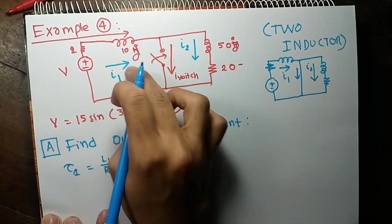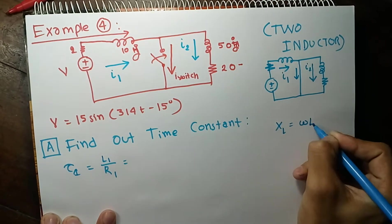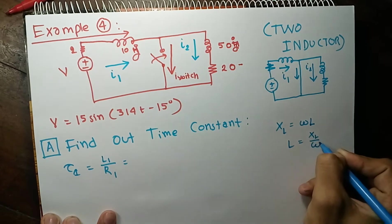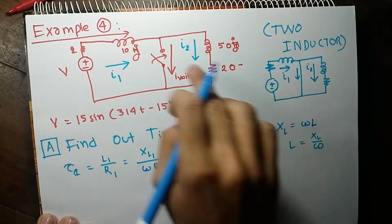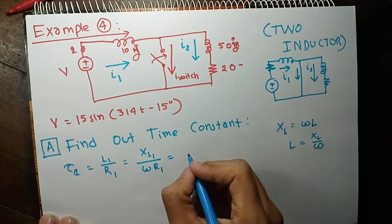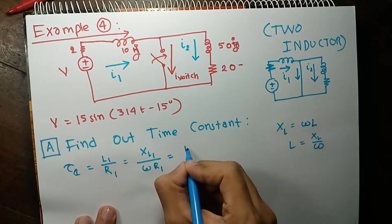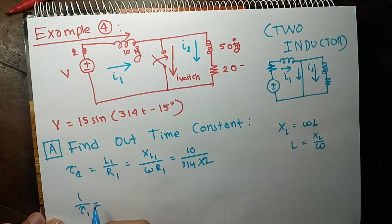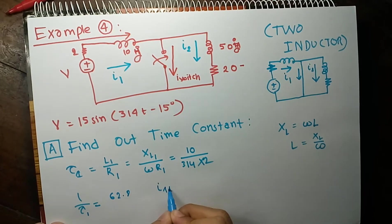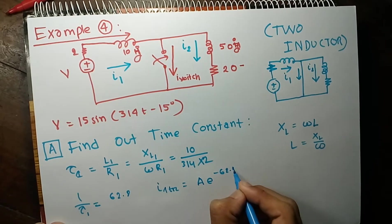The values are in phasor domain: 10j and 15j. Since XL = ωL, we have L = XL/ω. So τ₁ = XL1 / (ω · R1). XL1 is 10, ω is 314, and R1 is 2. So 1/τ₁ turns out to be 62.8. The first current will have a transient portion equal to A·e^(−62.8t).